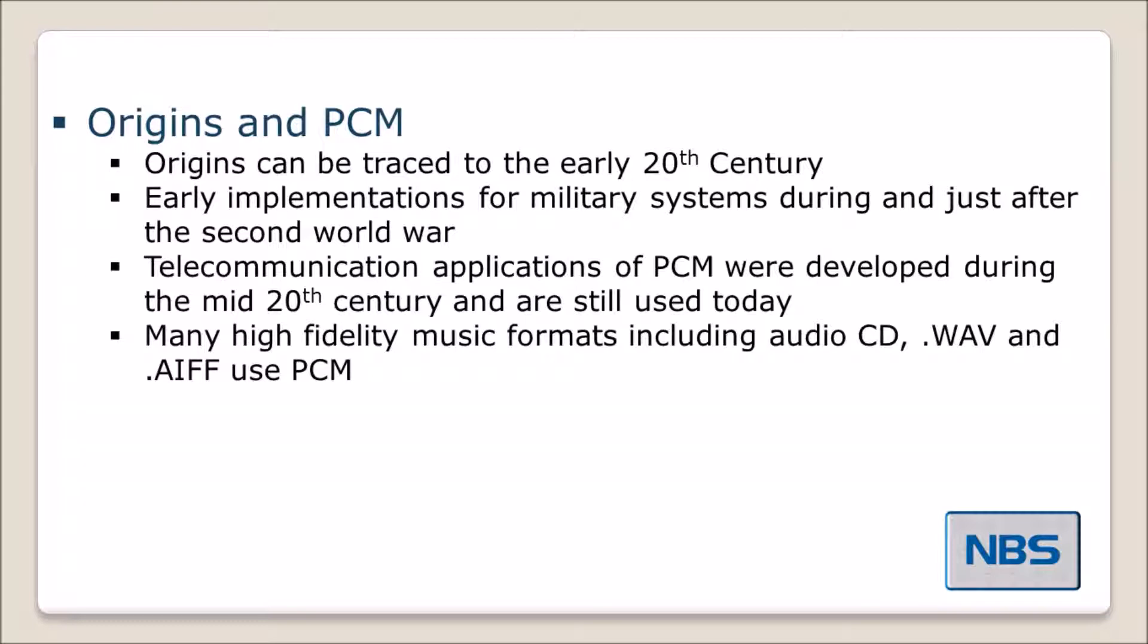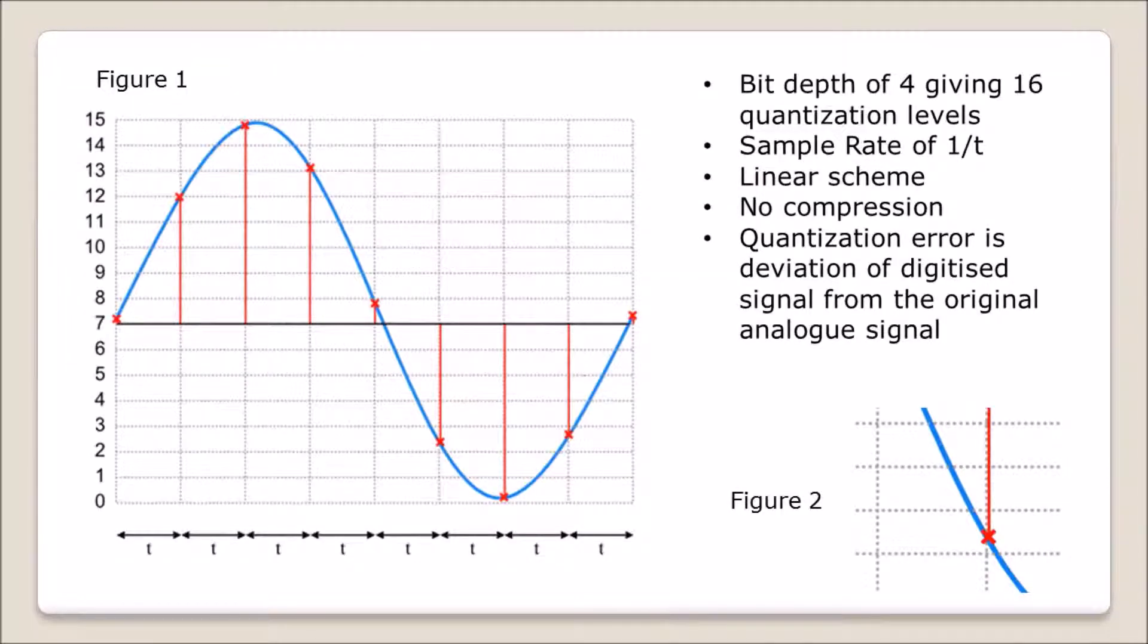So how does Pulse Code Modulation work? In Figure 1, the input analog signal I want to sample is the sine wave in blue. I've overlaid a grid over this wave with a bit depth of 4, giving 16 levels from 0 to 15. Every time period t, I'll take a measurement of the analog value of that sine wave and map it to the equivalent digital level. We take an analog signal, put it into an analog-to-digital converter, and we have digital values at known time period t. To reverse that and recover the signal, we put it into a digital-to-analog converter.